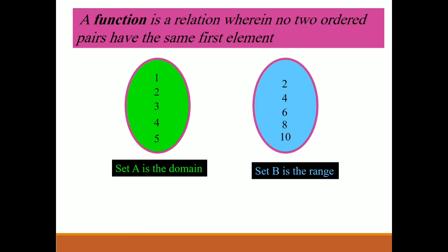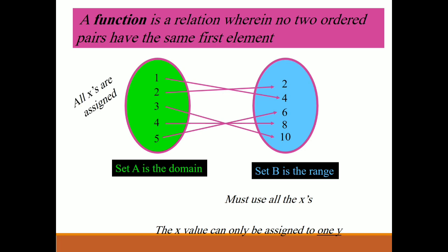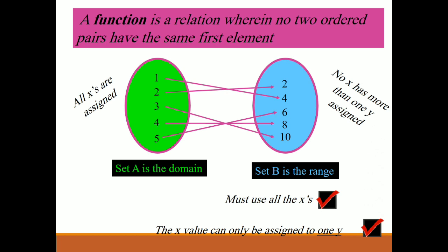We have set A and set B — the domain and the range. For a relation to be a function, it must satisfy two conditions: first, it must use all the x values, and each x value can only be assigned to one y. Looking at this mapping diagram, all x's are assigned, satisfying the first condition. No x has more than one y assigned, so it satisfies the second condition as well. So, this is a function.